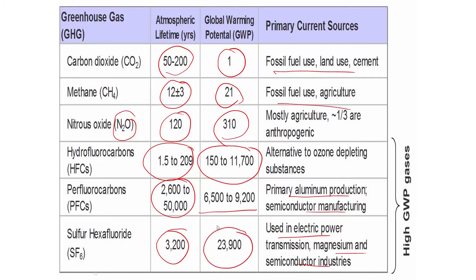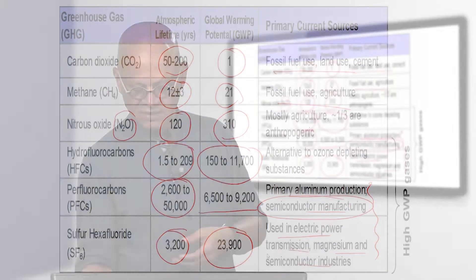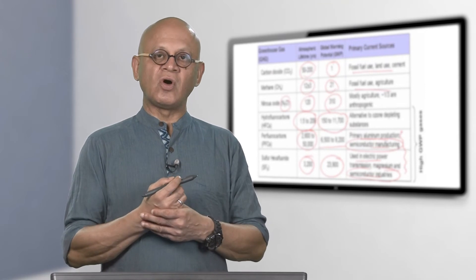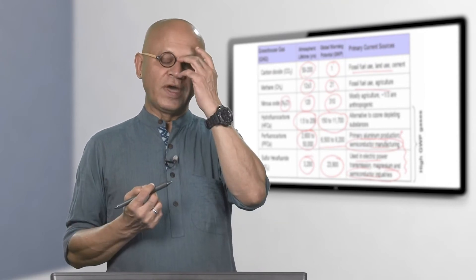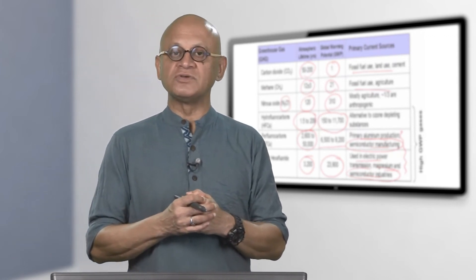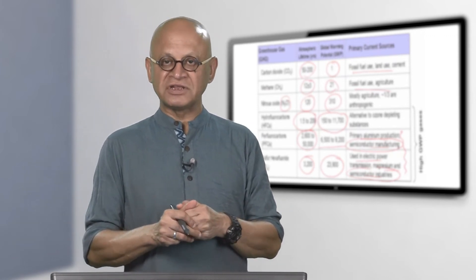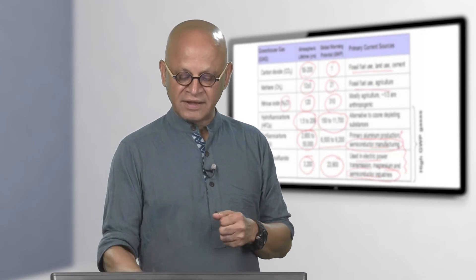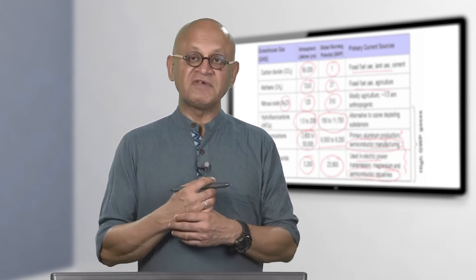Perfluorocarbons can stay for up to 50,000 years and are 6,500 to 9,200 times CO2 in their global warming potential. SF6 has almost 25,000 times the global warming potential and can stay for 3,200 years. HFCs come from electric power transmission and semiconductor industries; PFCs come from aluminum production and semiconductor manufacturing. All the industrial developments and scientific progress come with these substances, so we always have to be careful where the energy is coming from and what materials we are using.